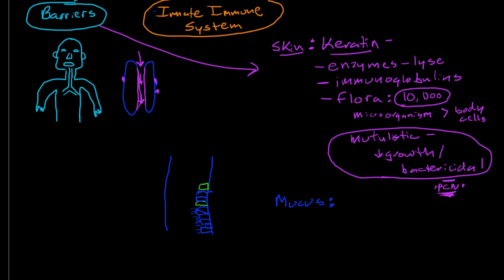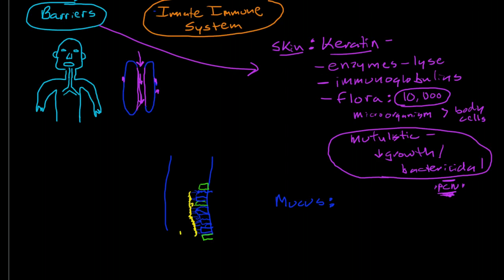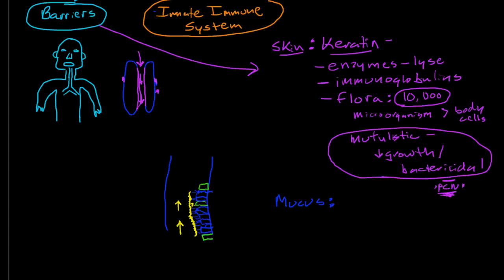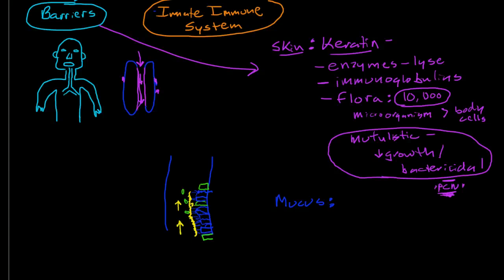This pseudostratified columnar epithelium is ciliated. This is just a review—we have these ciliated pseudostratified columnar epithelium. The goblet cells secrete really large amounts of mucus. What people don't realize is just how much mucus a normal lung has. It creates a blanket layer that rides on top of the cilia. The cilia beat in orderly fashion and constantly move this blanket layer up.